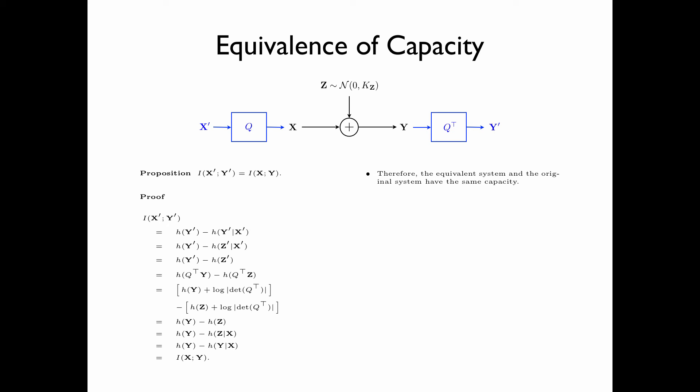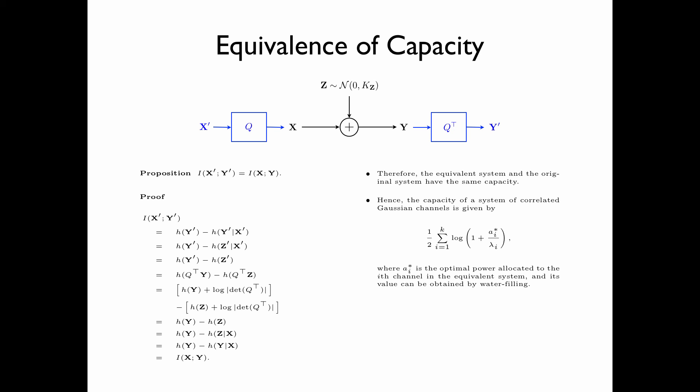Therefore, the equivalent system and the original system have the same capacity. Since the equivalent system is a system of parallel Gaussian channels, applying its capacity formula, the capacity of a system of correlated Gaussian channels is given by (1/2)·Σ_{i=1}^{k} log(1 + a*_i / λ_i), where a*_i is the optimal power allocated to the i-th channel in the equivalent system and λ_i is the i-th diagonal element of Λ — the noise energy of the i-th equivalent channel. The values of a*_i are obtained by water-filling.